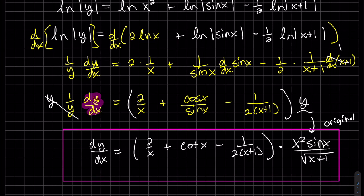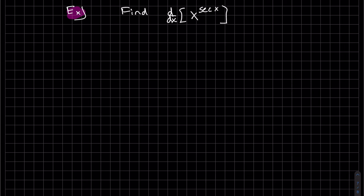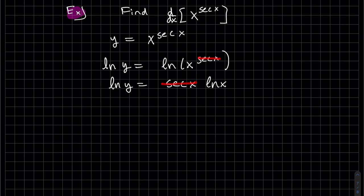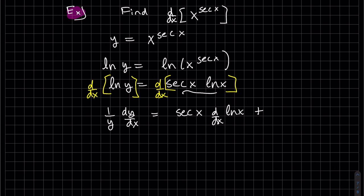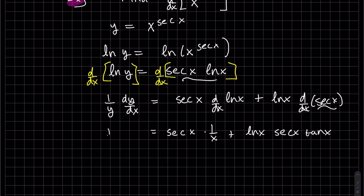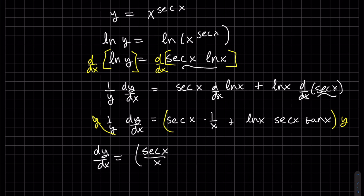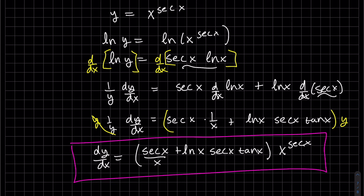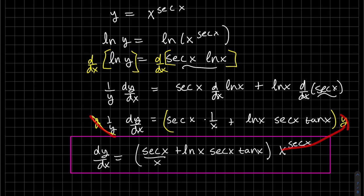One more example. Be careful here: we have a variable raised to a variable, so we cannot use the power rule, and we cannot use the exponential derivative either. What we can do is similar to the last problem — take the natural log of both sides to bring the variable power down as a product. That is the log power rule. Then take the derivative of both sides — product rule. Don't forget to back-substitute that y, because we started all in terms of x. And there's our answer.